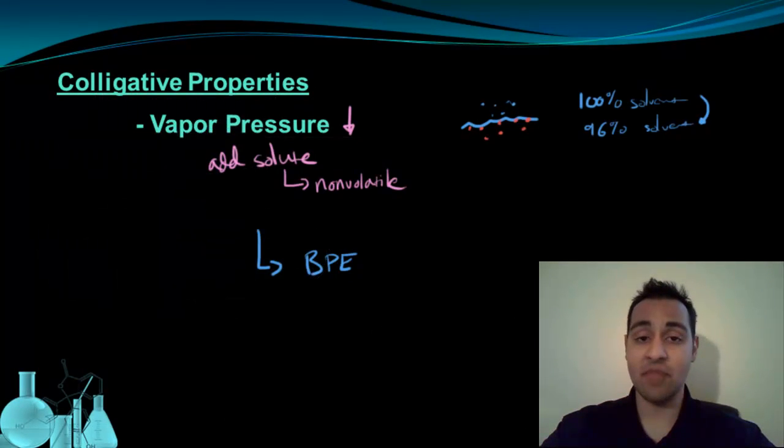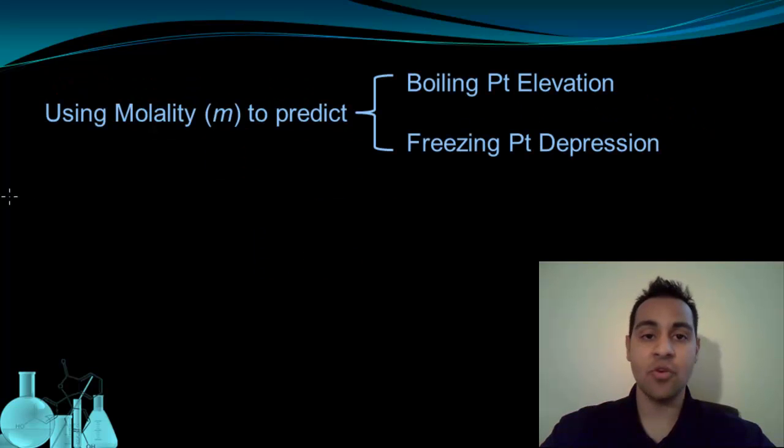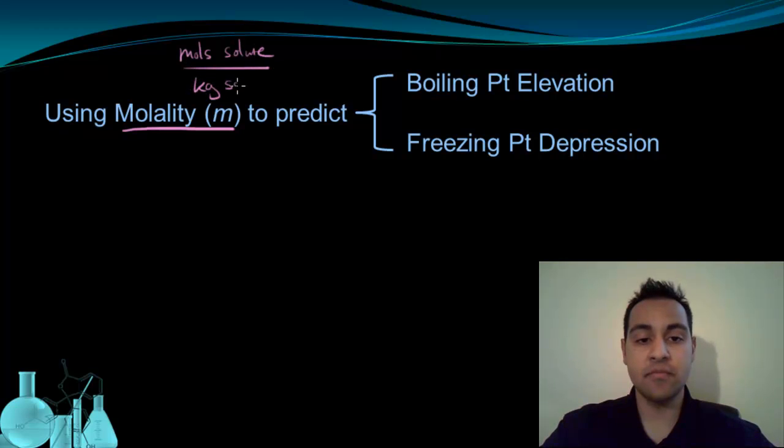Now that we've looked at three different colligative properties, we're going to see how we can calculate the degree to which these properties change based on the concentration of solute added. And to do that, we're going to use molality. So molality is useful because it relates moles of solute to kilograms of solvent. And we can use molality to predict both the boiling point elevation and the freezing point depression with two very similar equations.